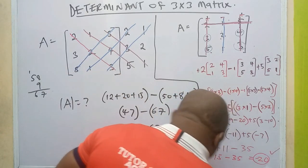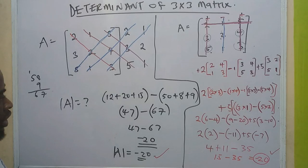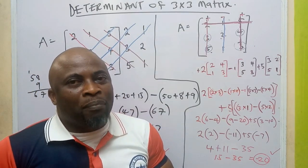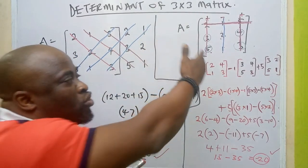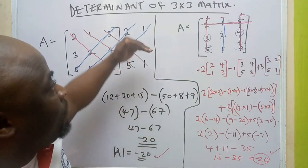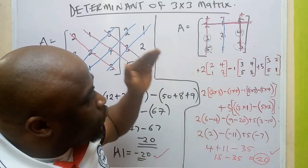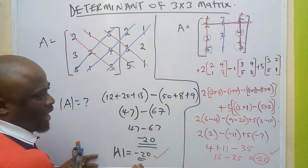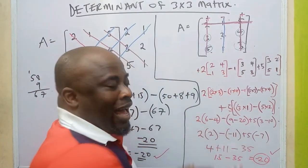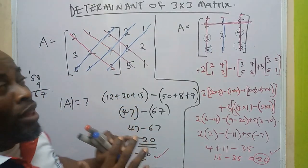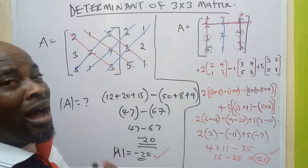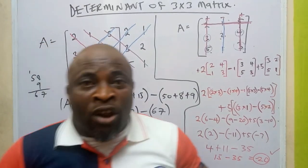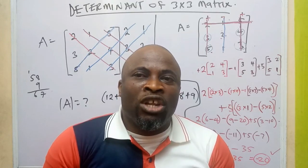So we have 4 plus 11 minus 35, which gives us 15 minus 35 equals minus 20. I have minus 20 here and minus 20 there — both methods give the same answer. You can use either method to find the determinant of a 3x3 matrix; it depends on which one comes to mind. You must know your 2x2 determinants before solving 3x3. Thank you — please subscribe, like my videos, and share my links.